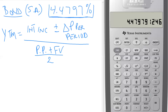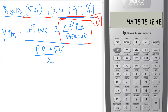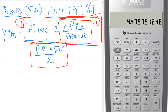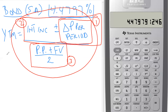We'll calculate this in steps. Step 1: calculate the change in price per period. Step 2: add the interest income to get the full numerator. Step 3: calculate the average of the purchase price and face value for the denominator. Step 4: put it all together to get the approximate yield to maturity.